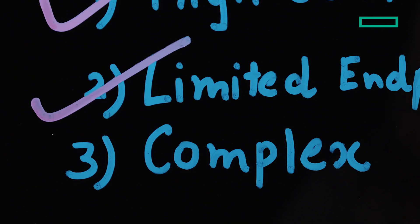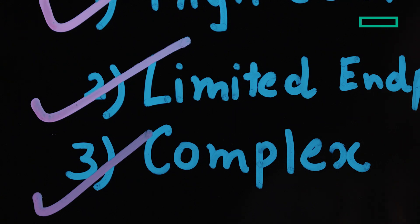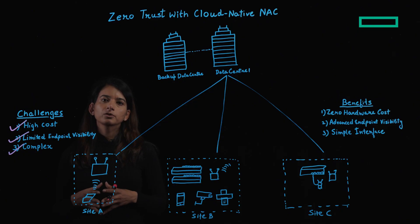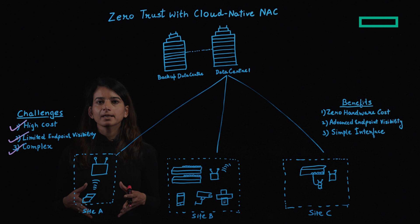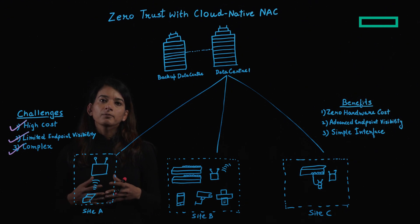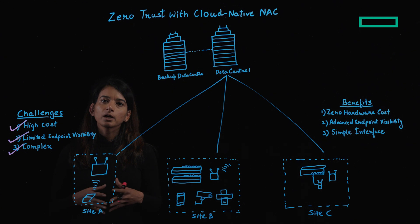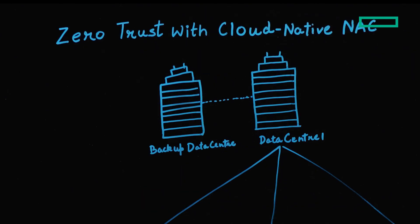And lastly, it's the complexity. Traditional NAC solutions are extremely complex to deploy and configure. They require a specialized skill set to configure and maintain the policies and rule sets. As a result, this slows down organizations' ability to roll out user onboarding, to adapt the solution quickly, creating functional challenges.